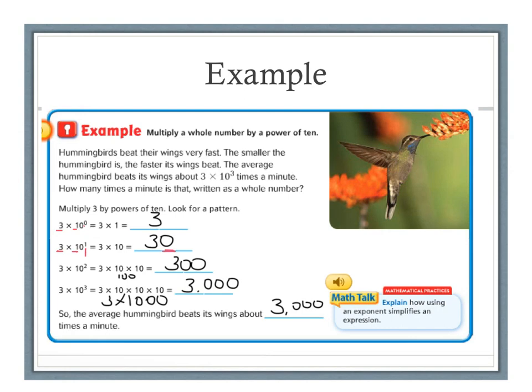Here it is. 3 times 1 is 3. My exponent's 2, so I have 2 zeros in my product. And 3 times 1 is 3, the exponent's 3, so I have 3 zeros in my product.